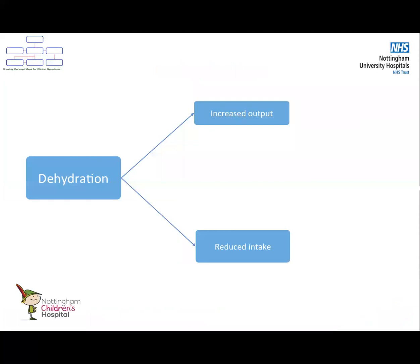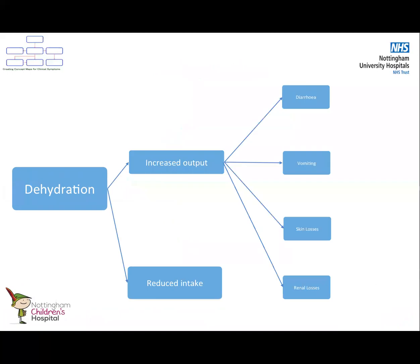The causes of dehydration can be split into two very broad categories: increased losses or decreased intake. Increased losses can take the form of various symptoms, for example diarrhoea, vomiting, and increased urine output.